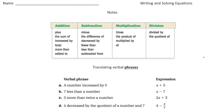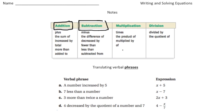The whole point of this lesson is to learn how to write your own equation and then solve it. I've created a list of keywords associated with addition, subtraction, multiplication, and division. For addition: plus, sum of, increased by, total, more than, added to. Subtraction: minus, difference of, decreased by, fewer than, less than, subtracted from. Multiplication: times, product of, multiplied by, or 'of.' Division: divided by or quotient of.